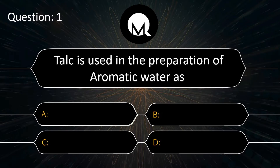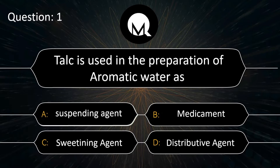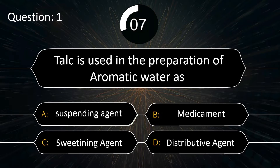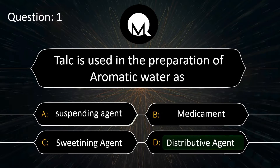Talc is used in the preparation of aromatic water as: suspending agent, medicament, sweetening agent, or distributive agent? Answer is distributive agent.